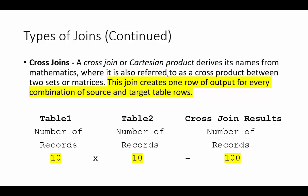Now we have cross joins. In this case the join creates one row of output for every combination of source and target table rows. So if table 1 has 10 records and table 2 has 10 records, a cross join gives every possible combination — so we get 100 records. You multiply the number of rows in each table to get the result.